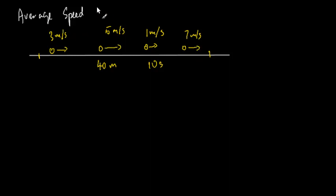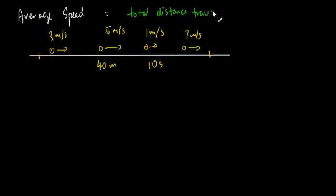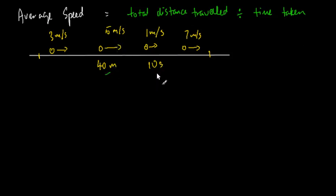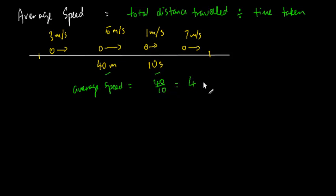So if it's going faster and slower irregularly, what is the speed? To find the speed, we use the idea of average speed. Average speed is defined as the total distance traveled divided by the time taken. So in this example, my average speed is 40 divided by 10, which is 4 meters per second. And that's my average speed.